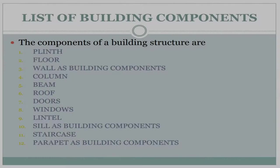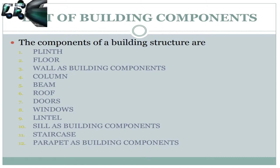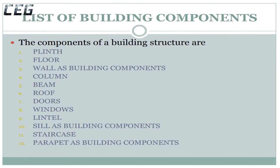The components of a building structure are: plinth, floor, wall, column, beam, roof, doors, windows, lintel, sill, staircase, and parapet.